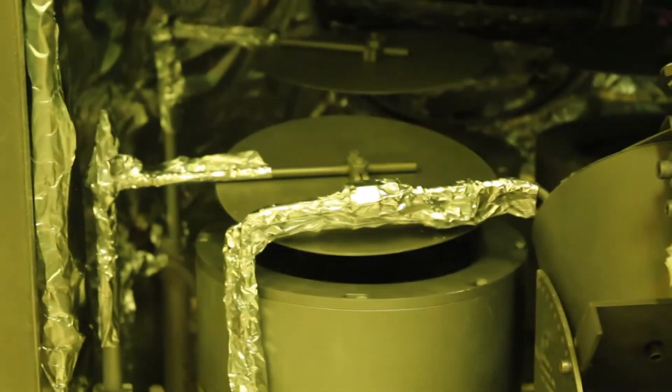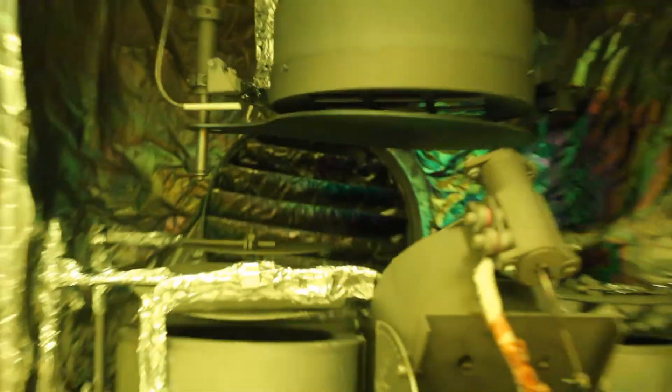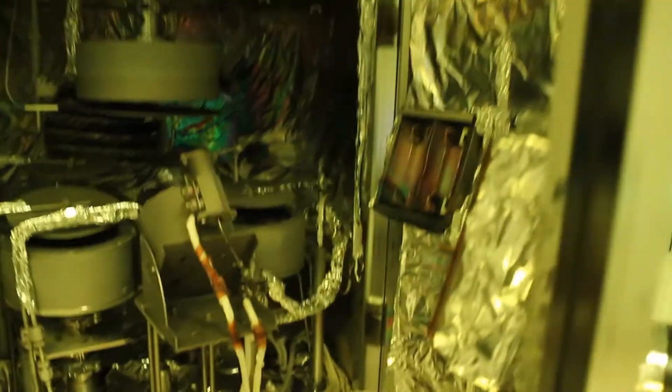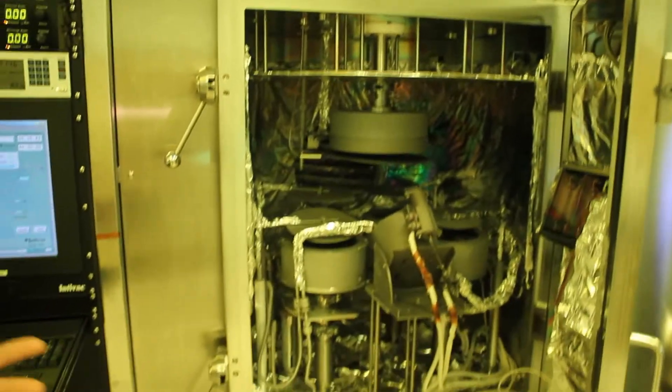Now the difference between the former system is that the targets here will be composed of very high purity metals and semiconductors. A few examples, for instance, we use silicon as a semiconductor and we can use aluminum, niobium, tantalum as the metal.